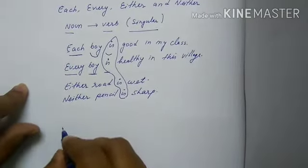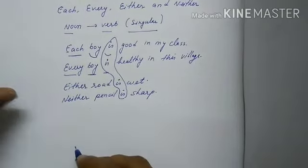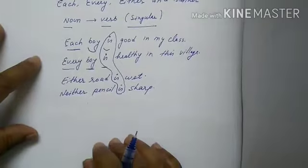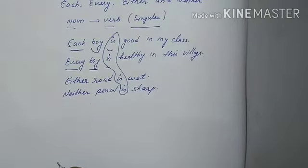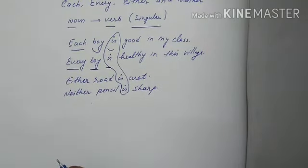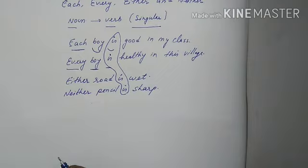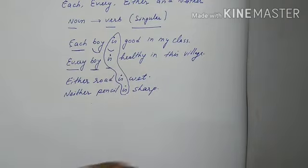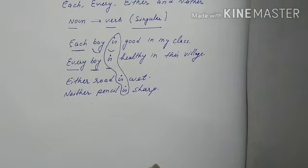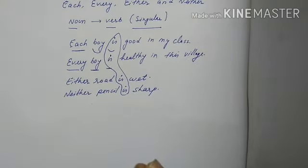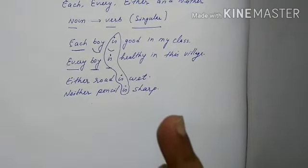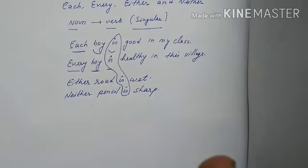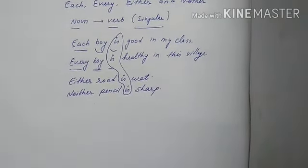In exams, questions are generally asked by putting 'of' after each, either, and neither. In such cases, remember: when 'of' is added after each, either, or neither, the noun will become plural, but the verb will remain singular. This is because the subject of the sentence is still each, either, or neither.